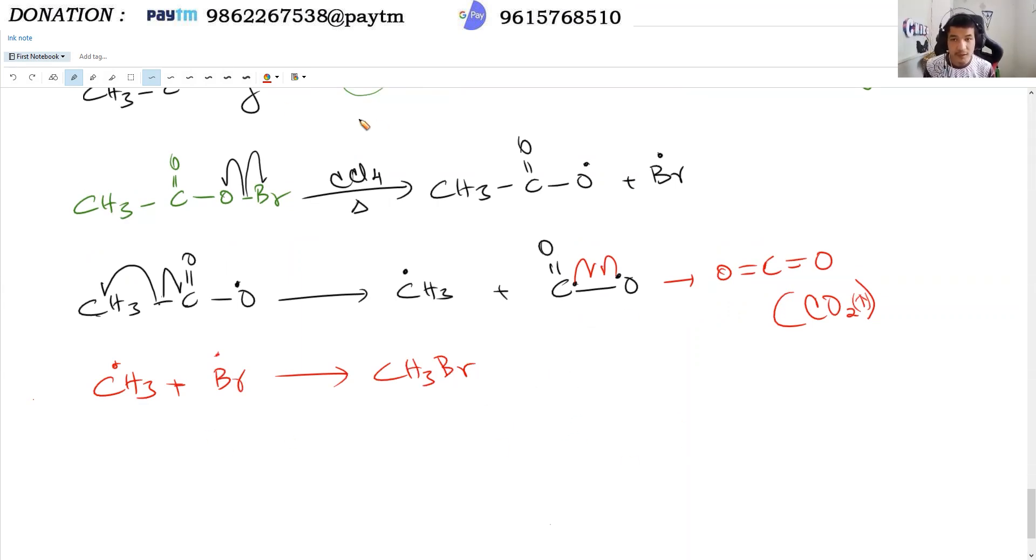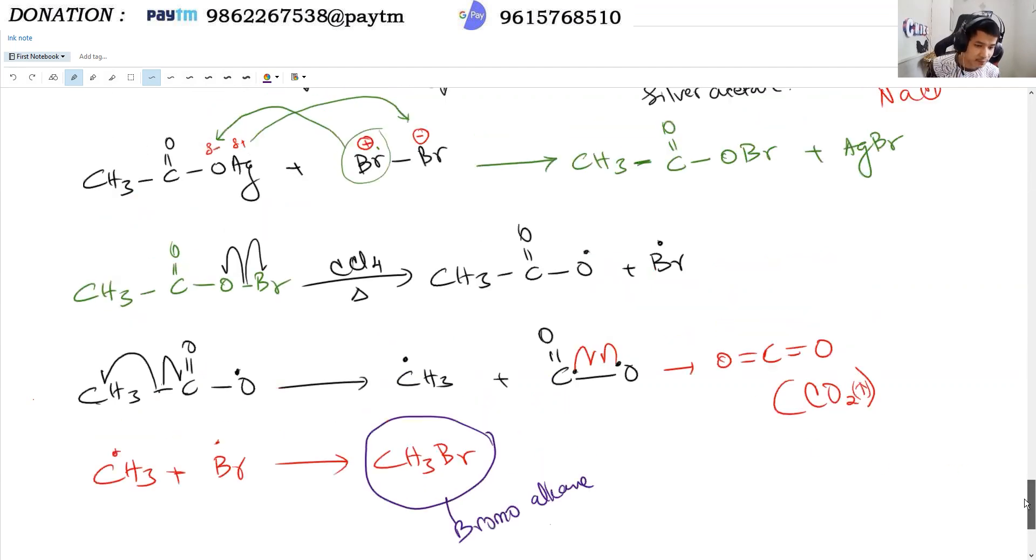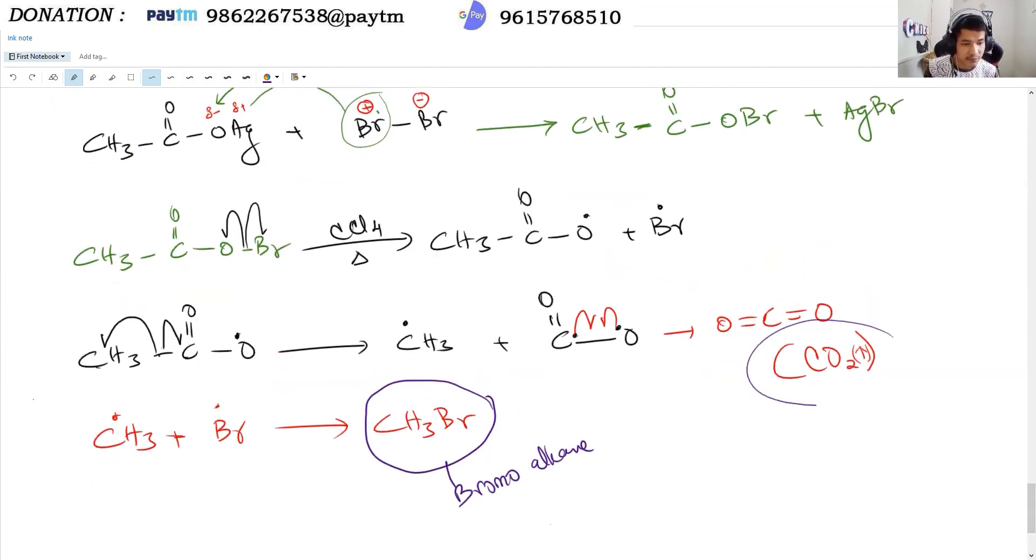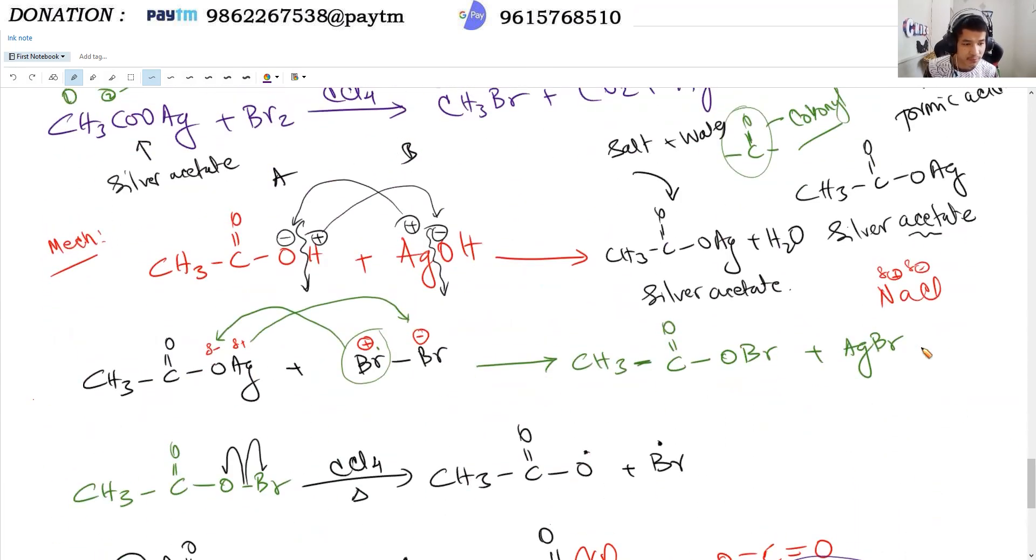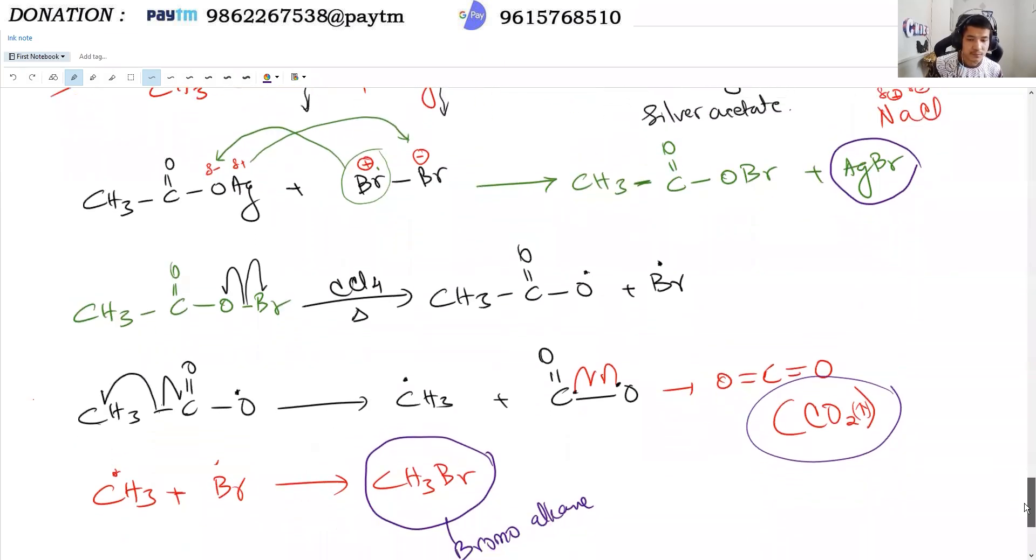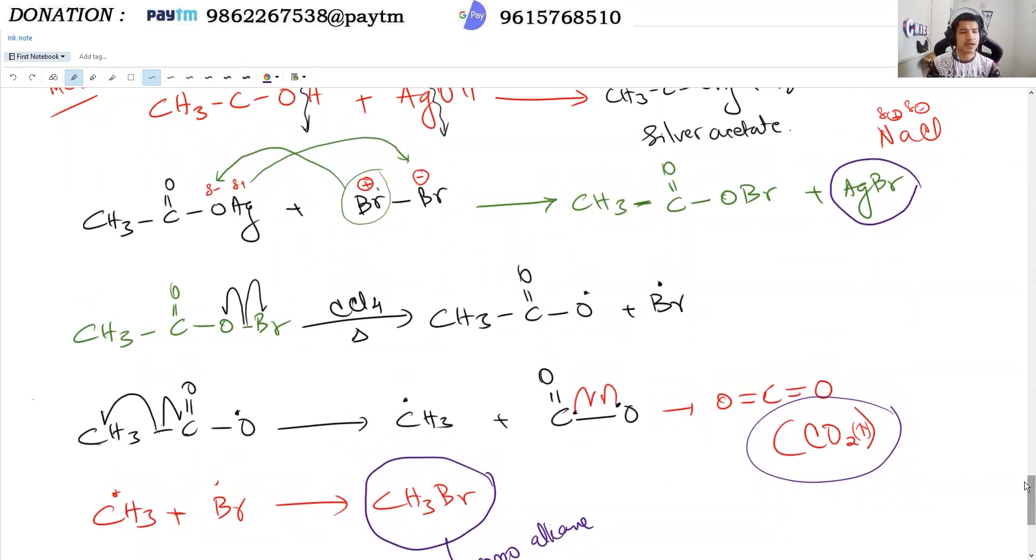The CH3• radical then combines with the Br• radical to form CH3Br plus AgBr precipitate plus CO2 gas. These are the major products.